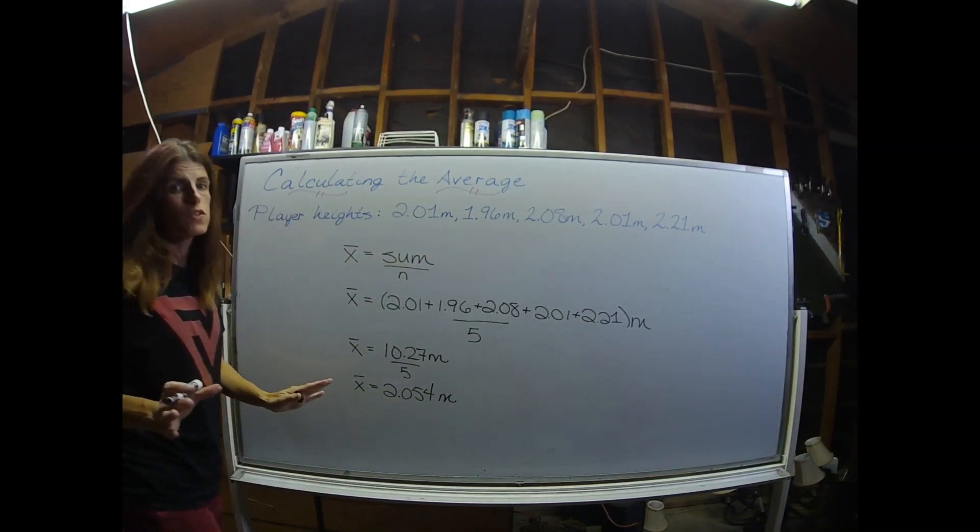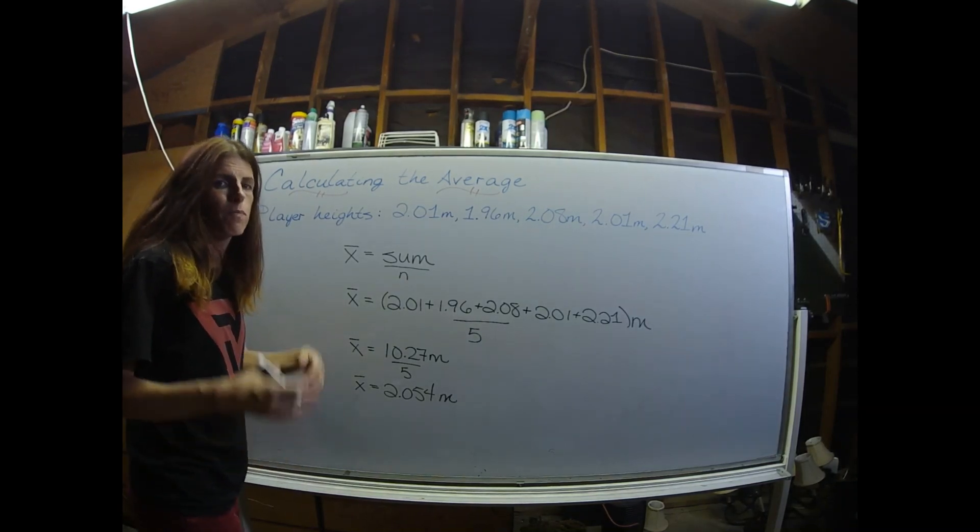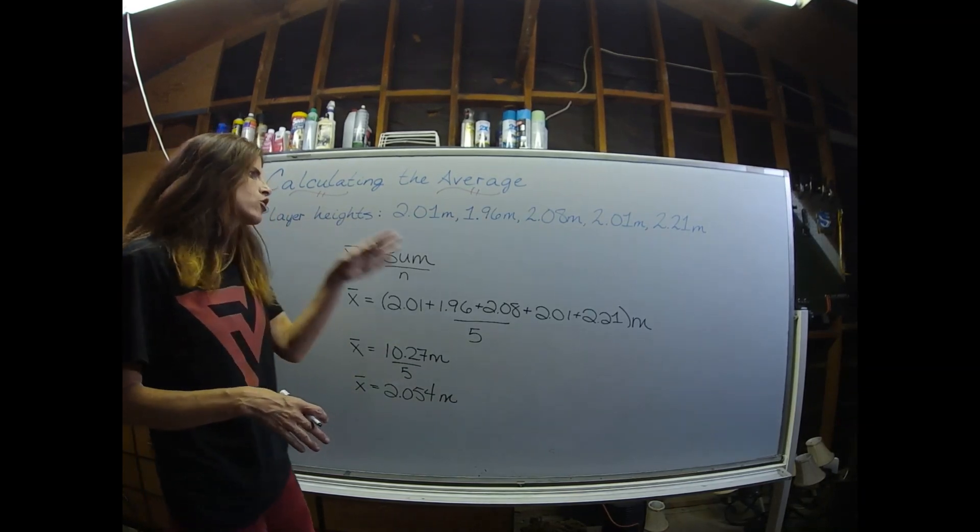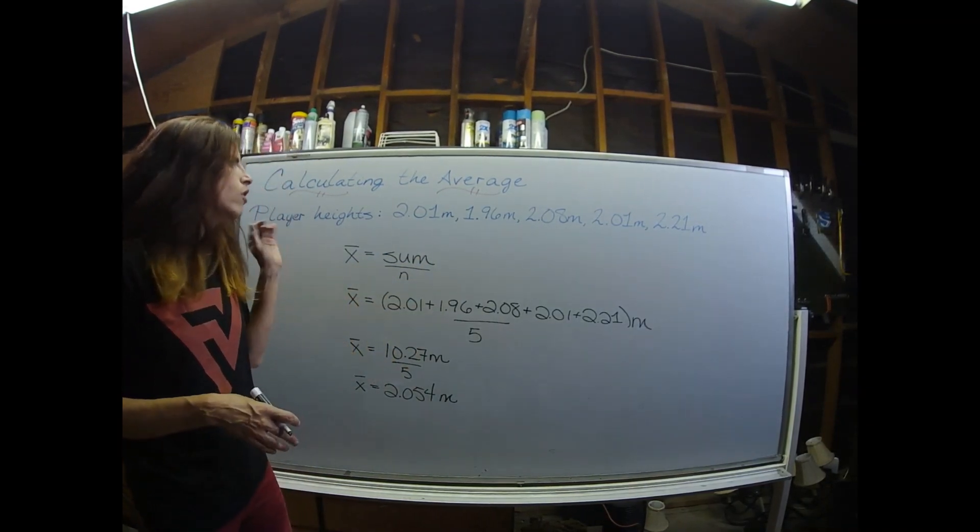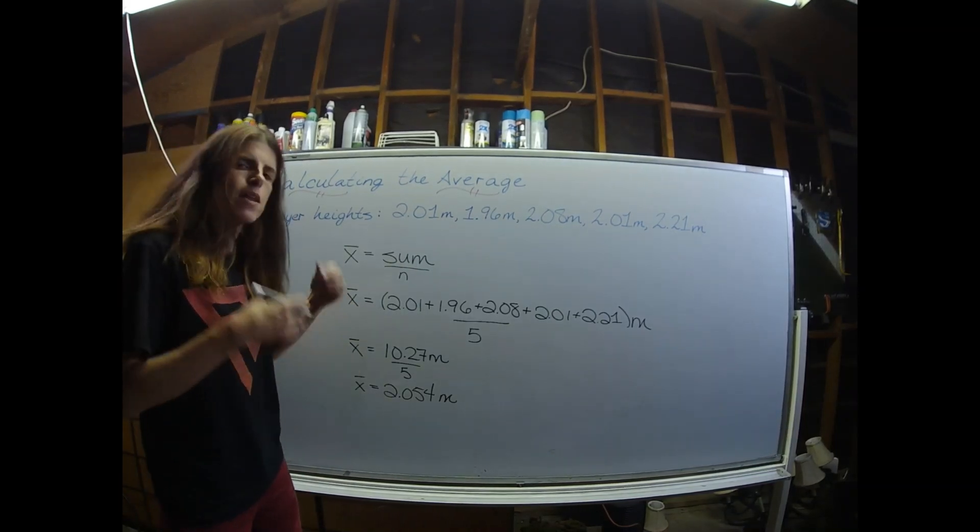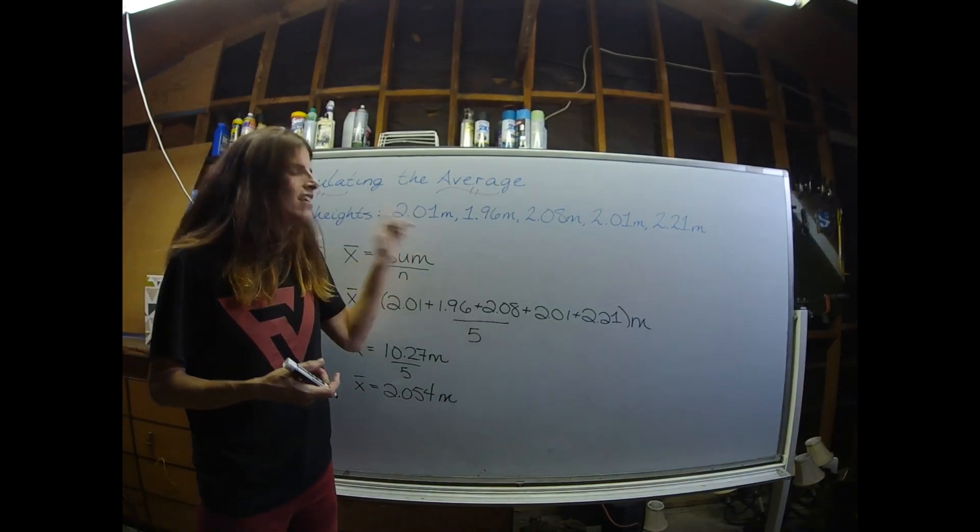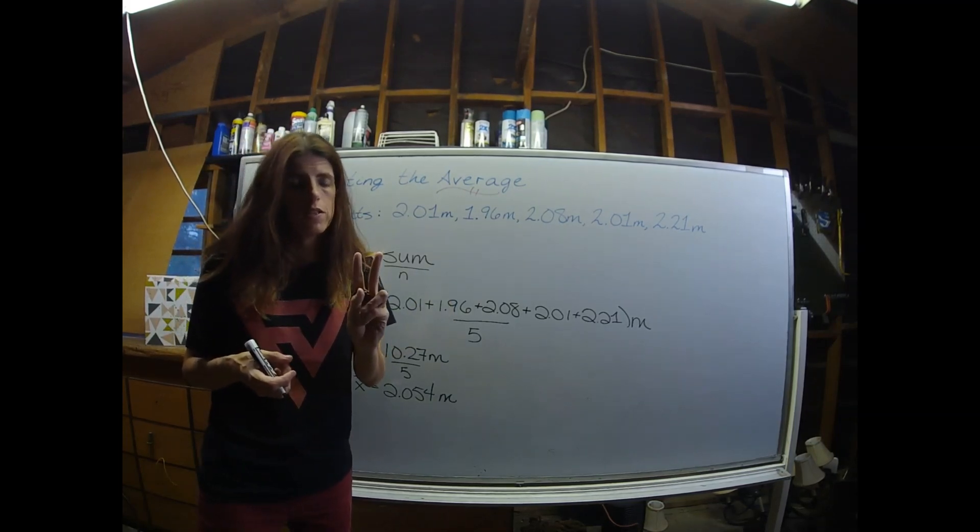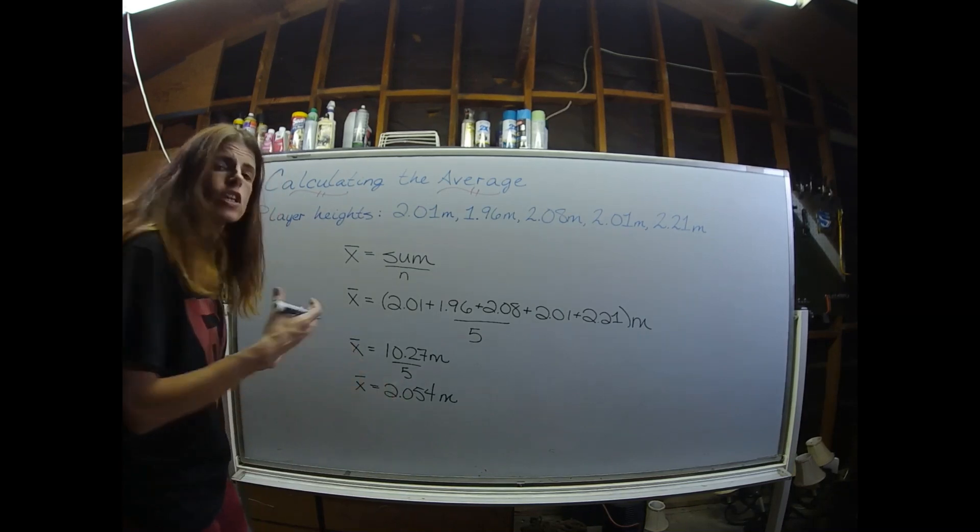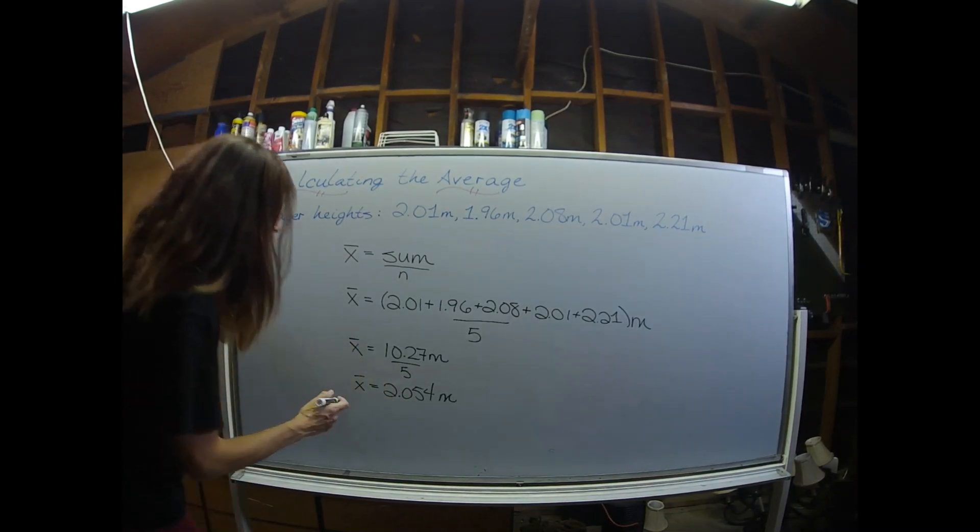In terms of sig figs, it's all about the precision of the equipment that you're using to take the measurement. Whatever measuring tape or ruler they were using to measure the player's heights, that device went to the hundredths place. It had two decimal places. So as a result, our average can only be reported to two decimal places.